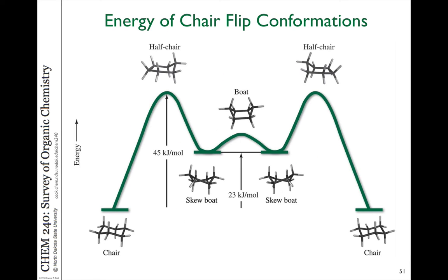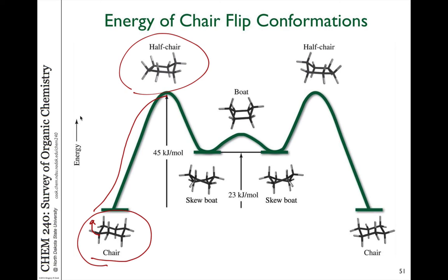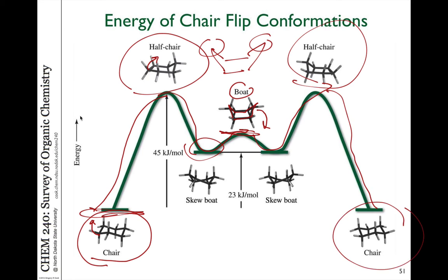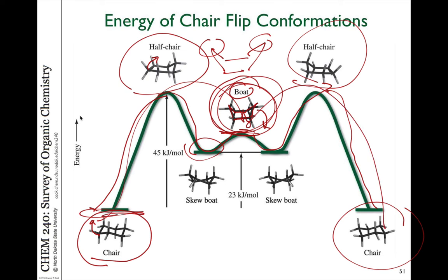If we analyze the energy of that ring flip, we can also look at the positions halfway through. Here's one chair structure on the left. As you start to rotate some of these bonds, we actually increase in energy and pass through a conformation that looks like a half chair. It can keep moving all the way to a boat structure — referred to as the boat because both ends are pointing up — which is higher in energy than the chair. It can also twist slightly before reaching that boat. Continuing, you get to the other half chair and then all the way to the ring-flipped isomer. So the chair structure goes through a higher-energy boat conformation on its way to the other chair.